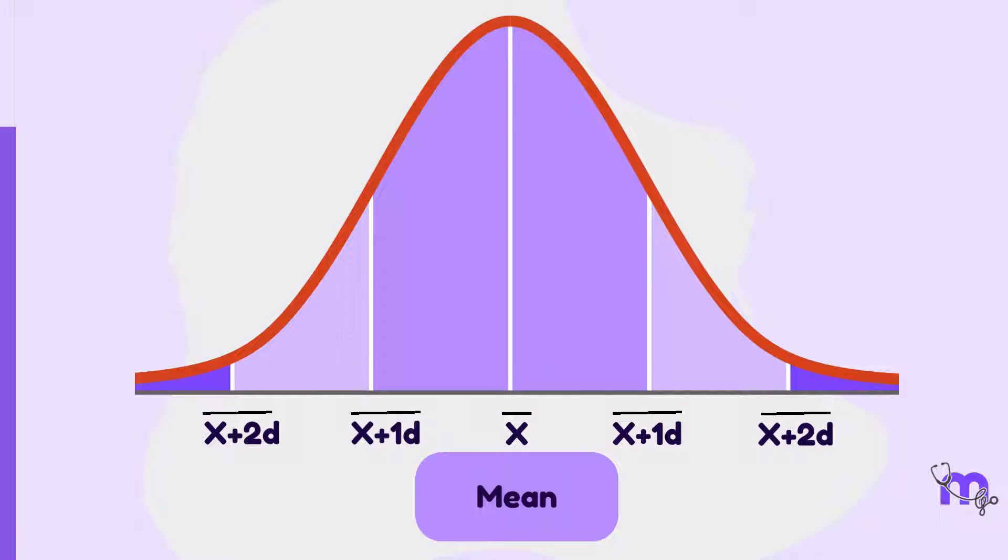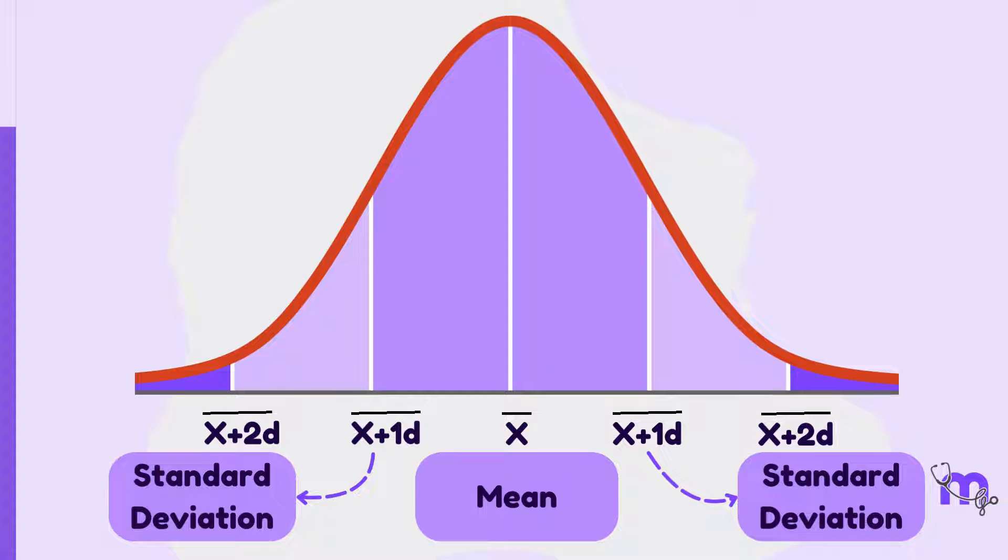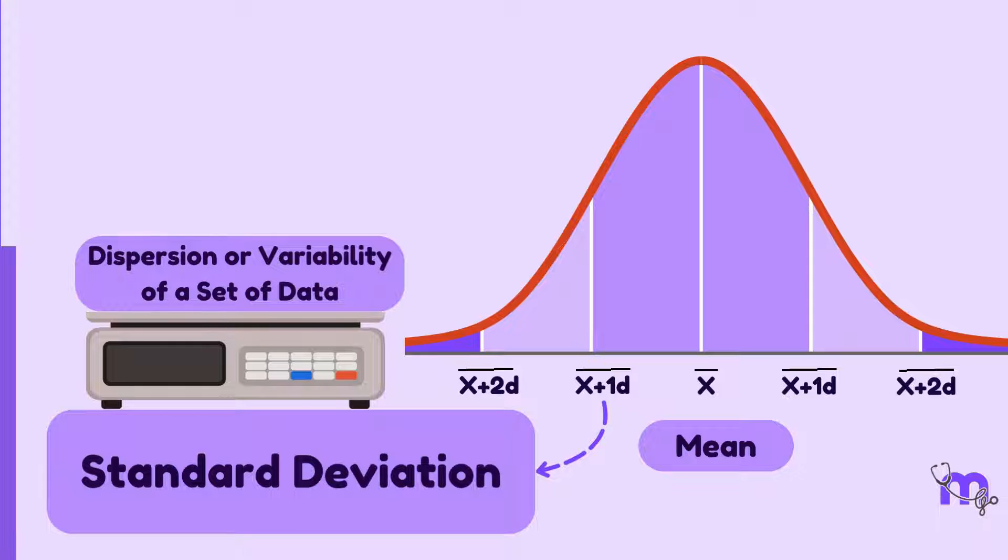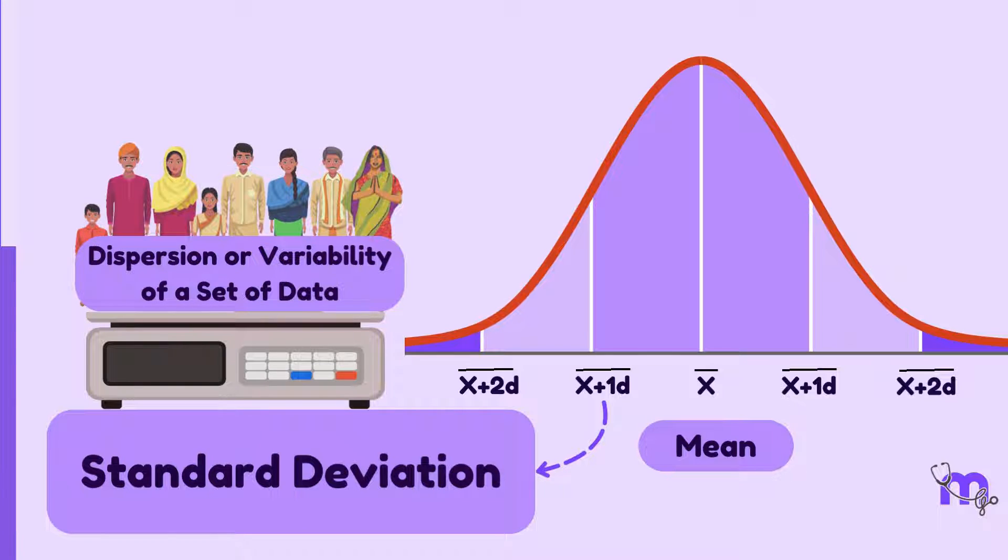On either side of the mean are sets of standard deviations. Standard deviation is a quantity that measures the dispersion or variability of a set of data points within a population, providing information about the spread of values around the mean.